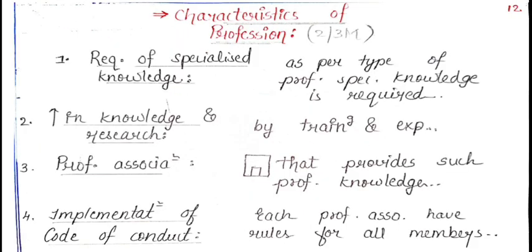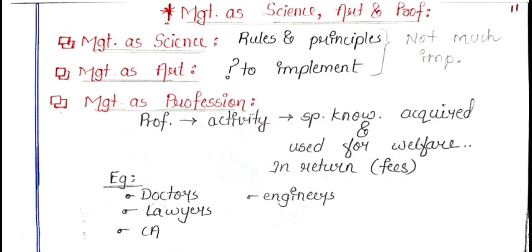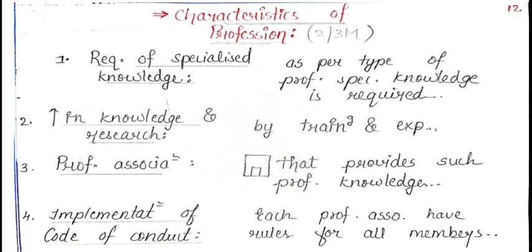There are characteristics of profession which can be asked for two or three marks. There are in total around five characteristics. The first is the requirement of specialized knowledge. As seen in the meaning, a profession requires special knowledge. As per the type of profession, specialized knowledge is required — if you are a doctor, you need medical knowledge; if you are a lawyer or a CA, you will require that specific kind of knowledge.